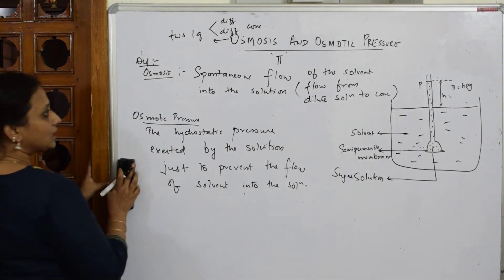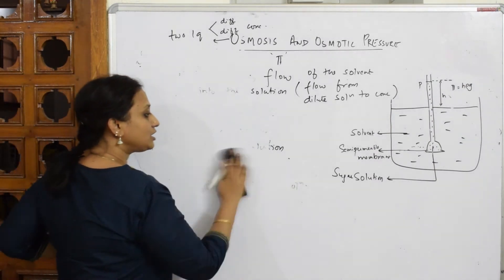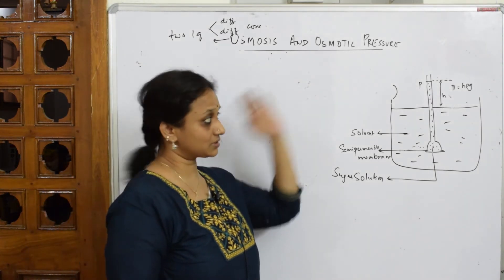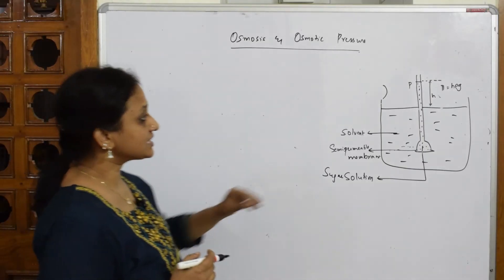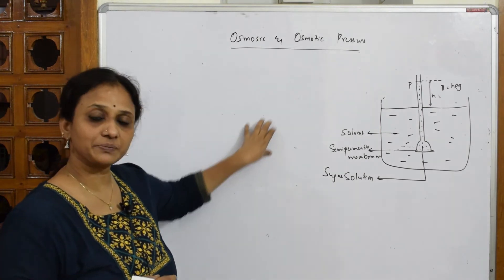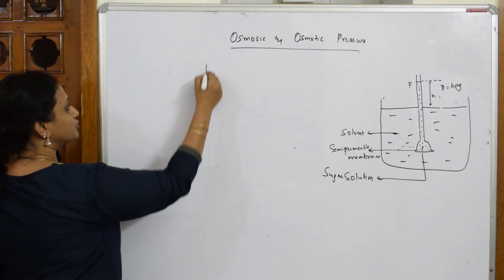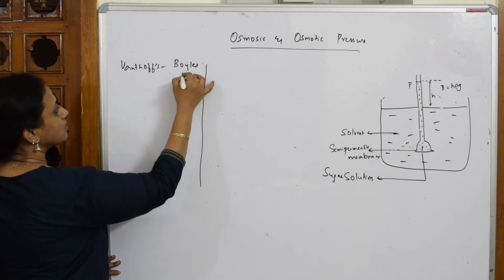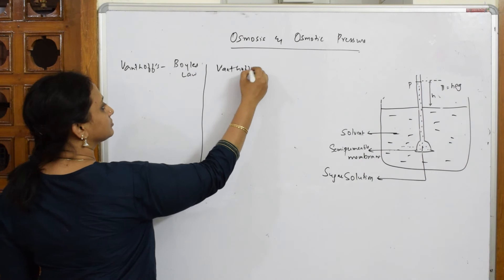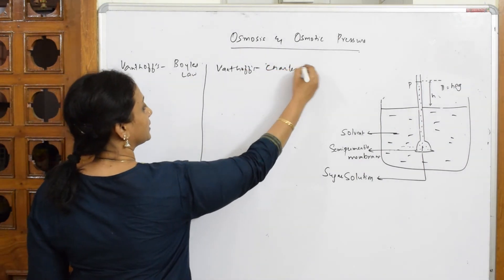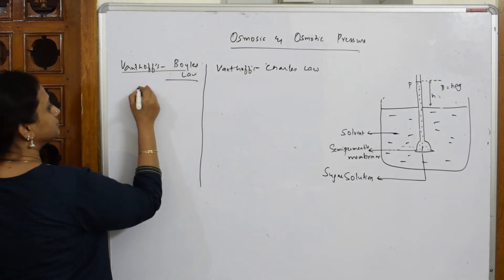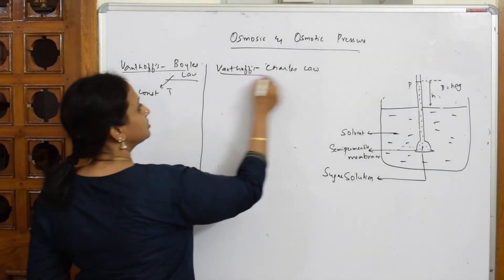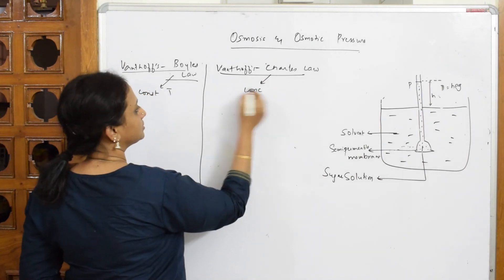We also call this concept Van't Hoff's laws. We are going to learn osmotic pressure — the pi value — in terms of two formulas: Van't Hoff's Boyle's Law and Van't Hoff's Charles Law. In Boyle's Law, temperature is constant. In Charles Law, concentration is constant.